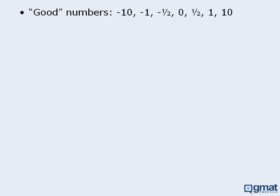Some good numbers include negative 10, negative 1, negative one-half, zero, one-half, one, and ten. Here we have negative numbers and positive numbers. We have zero, which is a special number that has some properties that other numbers don't have, and zero is typically an easy number to plug into equations. Negative 1 and 1 are also typically easy to plug into equations. Finally, two numbers that often prove to be very useful are negative one-half and one-half. These numbers have some very interesting properties that differ from properties of other numbers, so keep them in mind.